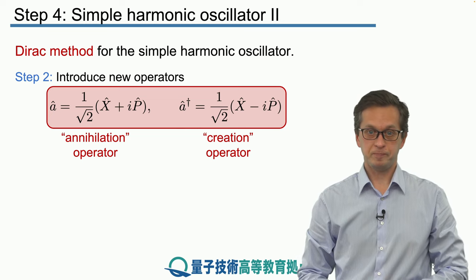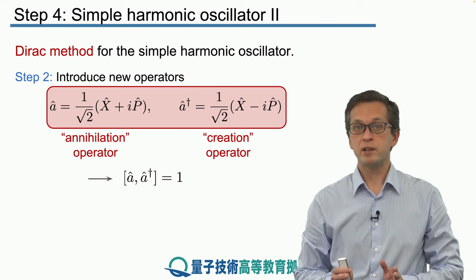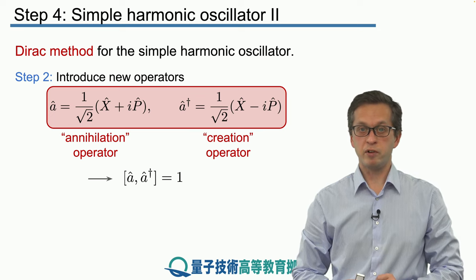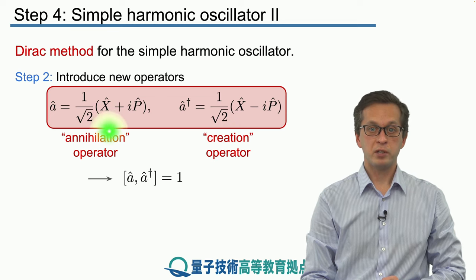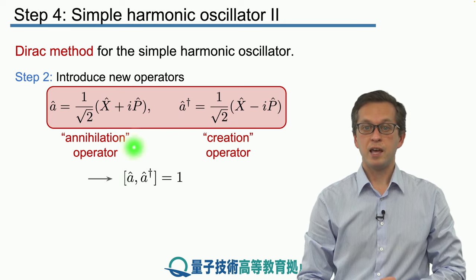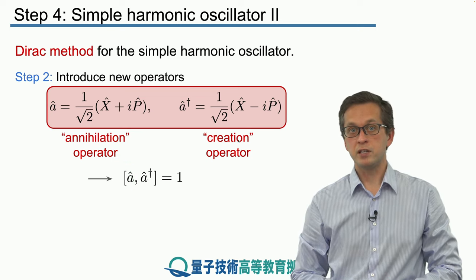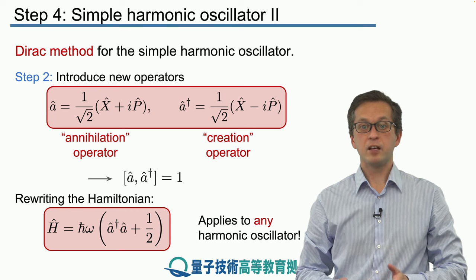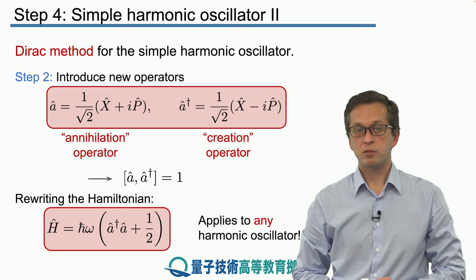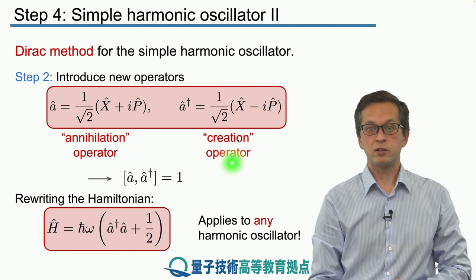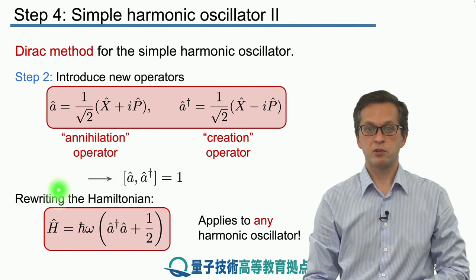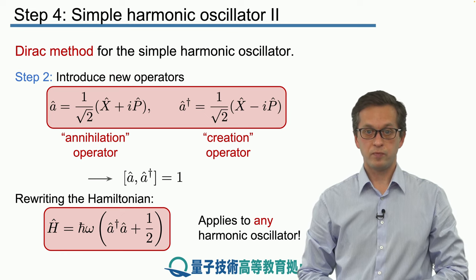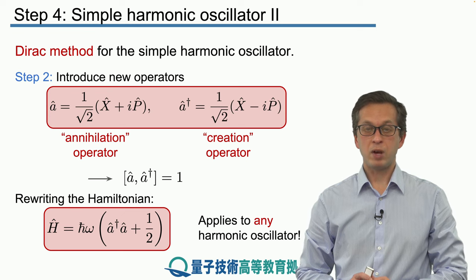For now, we want to check what is the commutator for a and a dagger. Knowing the commutators between your operators is very important. Substituting back using the commutator for X and P, we find that a and a dagger do not commute — the commutator is equal to one. I encourage you to do this calculation by yourself. Substituting into our Hamiltonian for capital X and capital P, we find the final form: h bar omega times a dagger a plus 1 over 2.